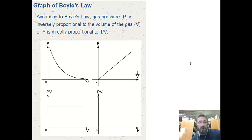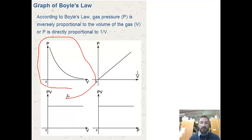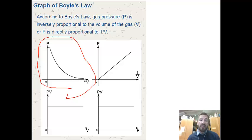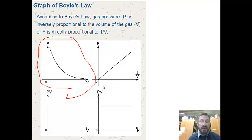The graph of Boyle's Law shows an inverse relationship. As you increase pressure, the volume gets smaller but never actually approaches zero, and as you decrease pressure, the volume gets much larger. We could also take pressure and the inverse of volume and see a direct relationship. Notice that pressure times volume is a constant — so whether you increase volume or increase pressure, P times V is always the same number.